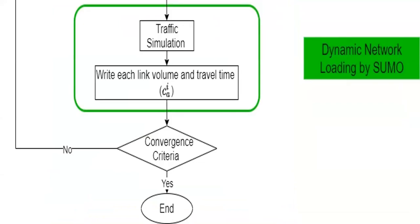After the first part, we have the dynamic network loading by SUMO. The selected paths of each vehicle are imported into SUMO, and SUMO runs the simulation. At the end of each simulation, it writes each link's volume and travel times. Then we check a convergence criteria, and this process is performed iteratively. By performing such a process iteratively, the total travel time of the network will be minimized.